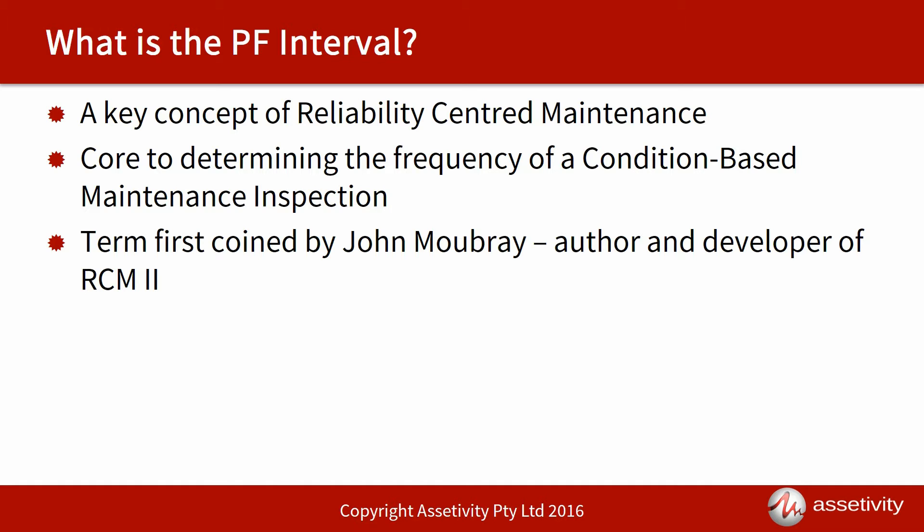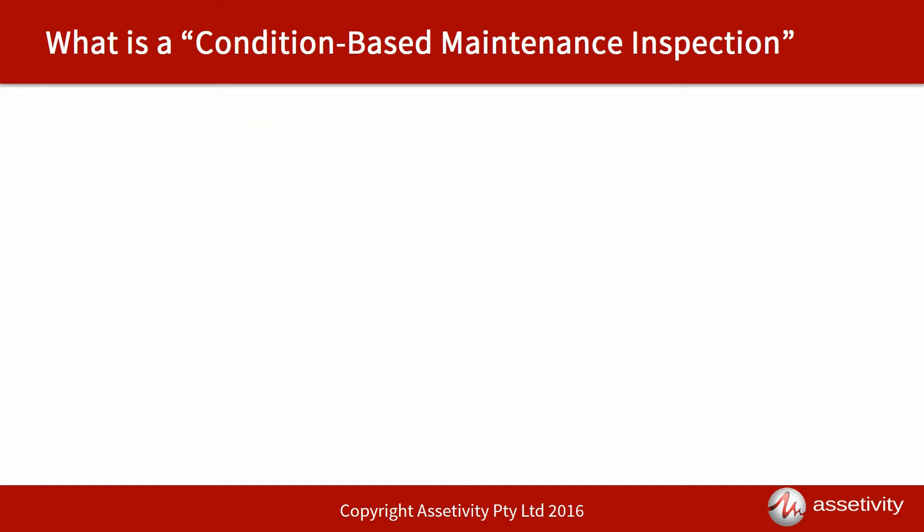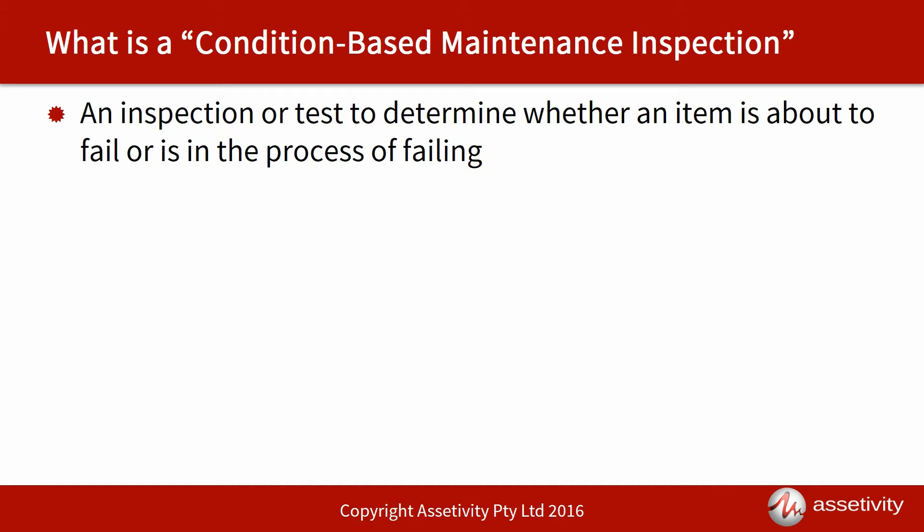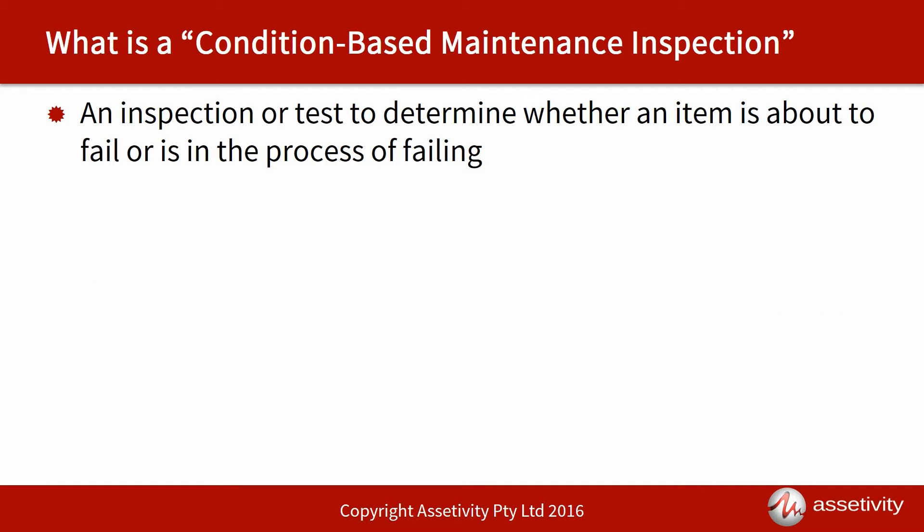It's core to determining the frequency of a condition-based maintenance inspection. A condition-based maintenance inspection is really an inspection or test to determine whether an item is about to fail or is in the process of failing. A key requirement for us to be able to do such an inspection is that the item must give us some warning that it is about to fail — and fortunately that's very often the case.